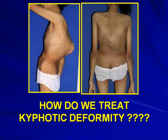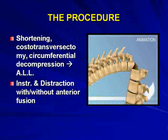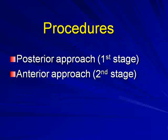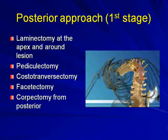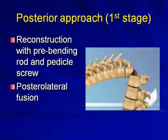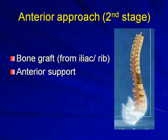The procedure involves shortening, posterior osteotomy, circumferential decompression from the posterior, then instrumentation and distraction. Sometimes we use a laminar spreader from the posterior with anterior fusion. This is done in two stages: first posterior, then anterior approach. This can be done in one setting, or we may delay the second stage two weeks after the first surgery. We use a pedicle screw and rod system with pre-bending of the rod and lateral fusion. For the second stage anteriorly, we place a graft, and if the gap is large enough, we can place a spacer such as cages.